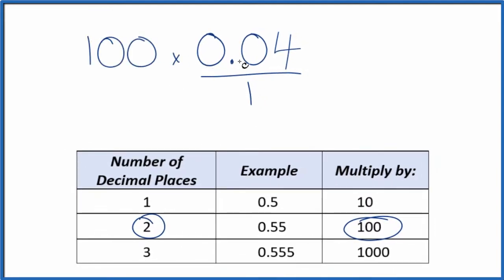So 100 times 0.04, that just equals 4. So we have our whole number, but we can't just multiply the top. We need to multiply the bottom by 100 as well. So 100 times 1, that just gives us 100. And now we have 4 over 100, and that's a fraction.